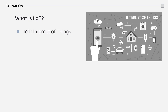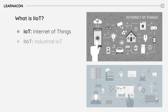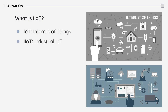Now imagine a factory where machines, sensors, and even raw material can talk to each other and the internet. That's a good example of IIoT. Industrial IoT is an ecosystem of devices, sensors, applications, and associated networking equipment that work together to collect, monitor, and analyze data from industrial operations. In this video, when we talk about IoT, we refer to the industrial version of it, which is called IIoT.